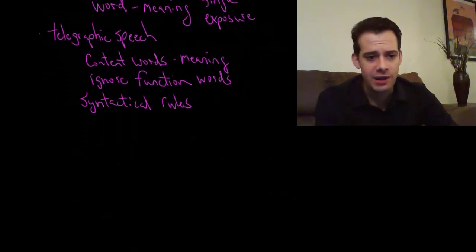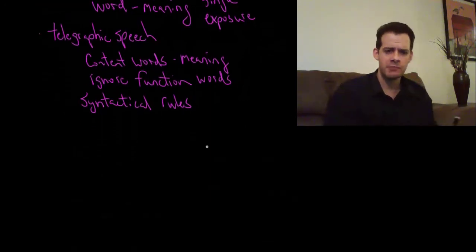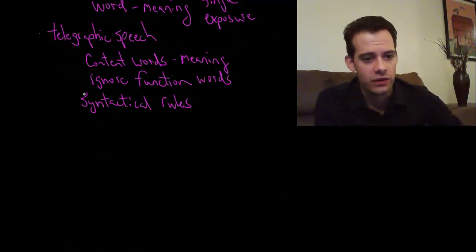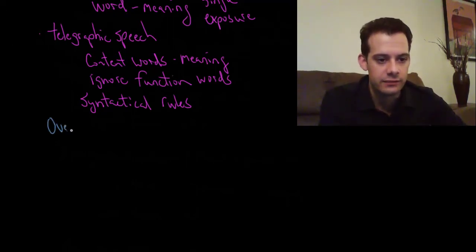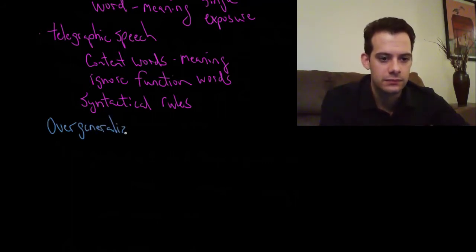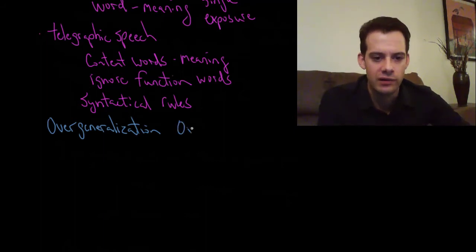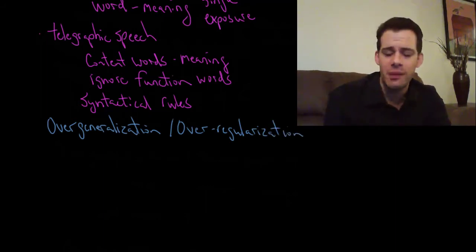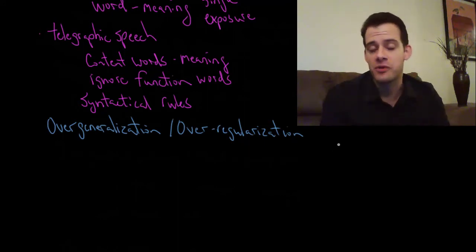Now children start doing this around age 2 or 3 but around age 4 or 5 something interesting starts happening. They actually start making errors in their grammatical rules. So this brings us to what's called overgeneralization. Or you may also see this called over-regularization.